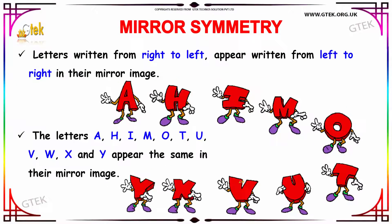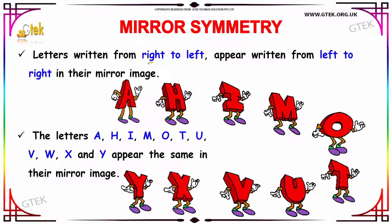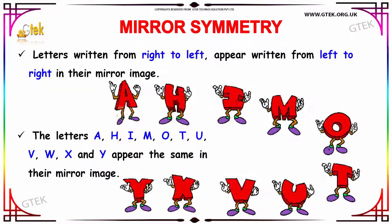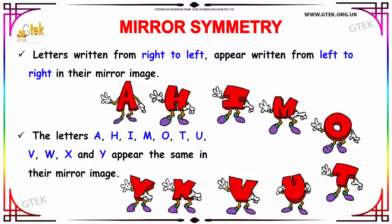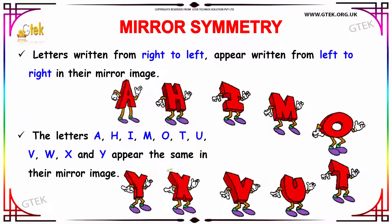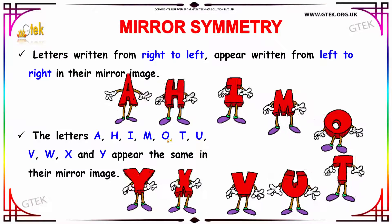The letters which are written from right to left appear to be written from left to right in the mirror image. The letters such as A, H, I, M, O, T, U, V, W, X, and Y appear the same in the mirror image.